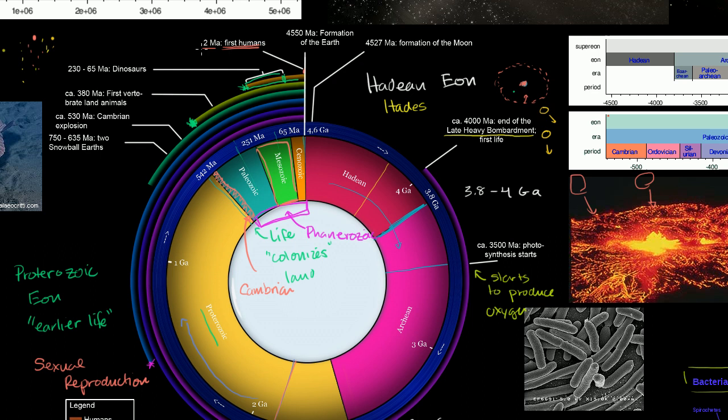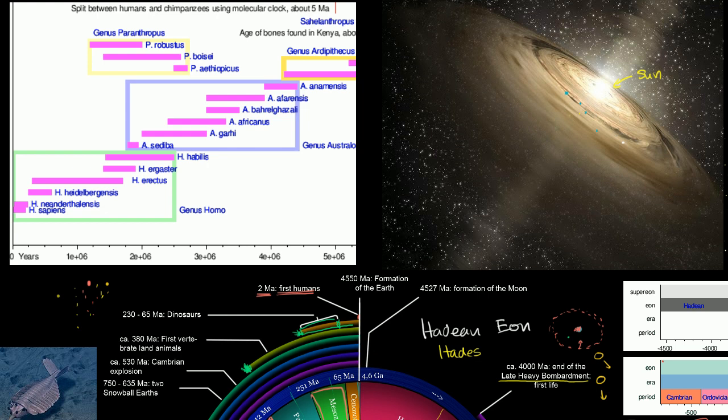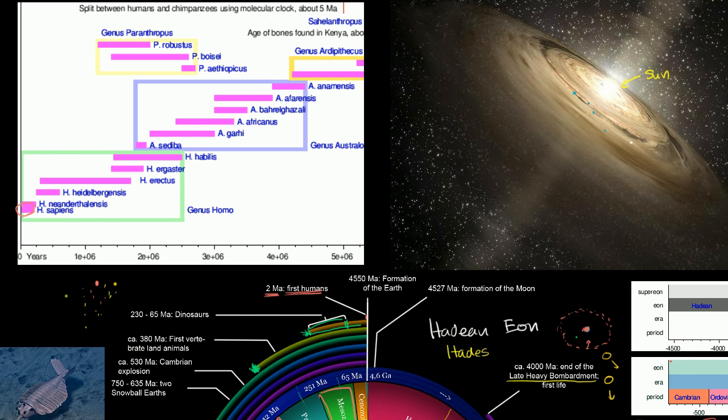And just to give you an idea of how new we are and how new our evolution is, it was only 5 million years ago. So this is just to get a sense. This is zero years. Homo sapiens sapiens, only around for 200,000 years. The Neanderthals, they were cousin species. They weren't our ancestors. Many people think they were. They were cousin species. We come from the same root.